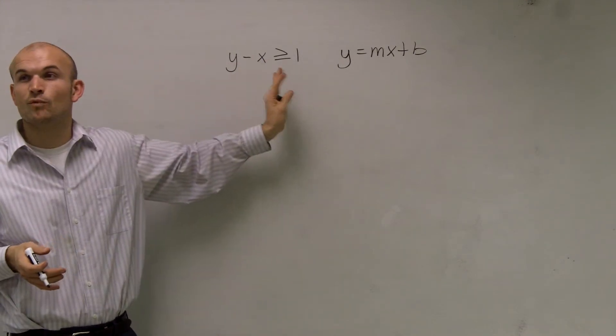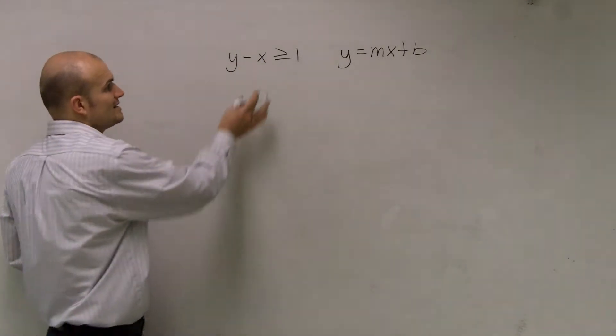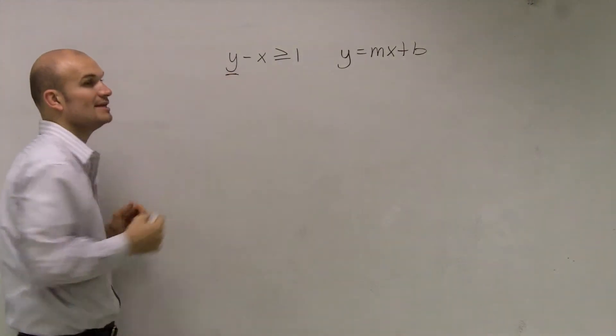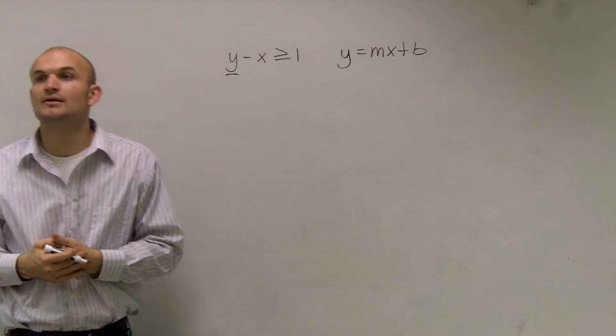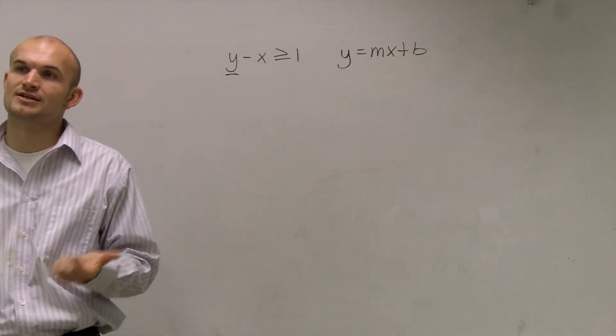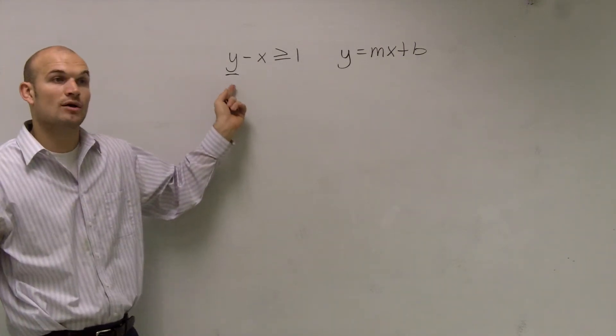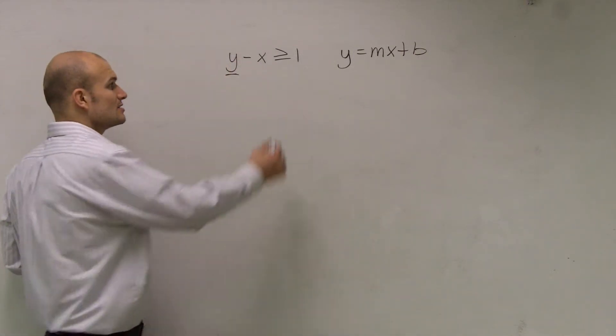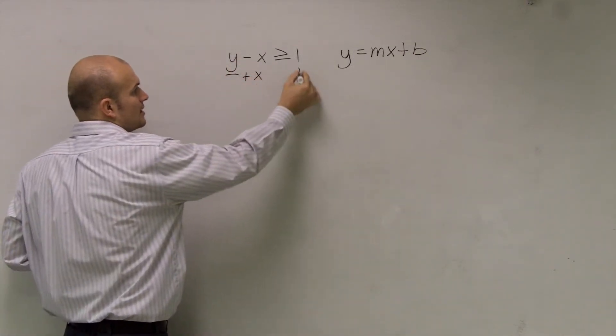So what I'm going to do is I just need to get it in y form. So to do that, I need to get rid of this negative x. So I need to solve for my y. So what I need to do is undo what's happening to the y. So to do that, I look at it, Josh, and I say, what is happening to my y? I say, well, my y is being subtracted by x. So to undo subtraction of x, you add the x to both sides.